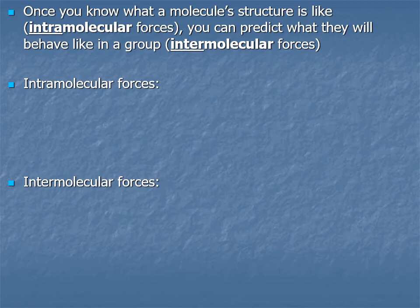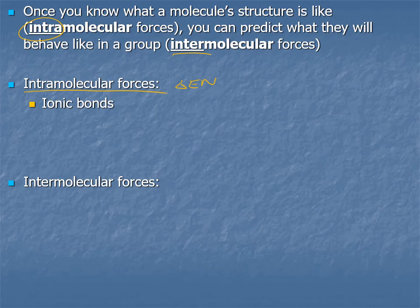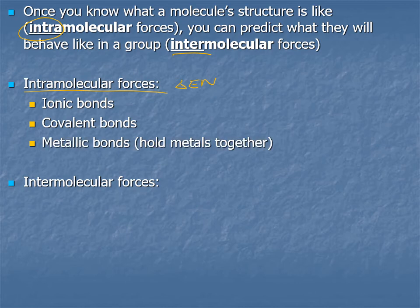So figure out the intramolecular forces — what are the particles like — and then you can figure out the intermolecular forces and all the properties that arise. For intramolecular forces, we calculate the electronegativity difference. Atoms can form ionic bonds, covalent bonds, or metallic bonds. Metals form a crystal where they share electrons — that's called a metallic bond. All three of those are intramolecular.